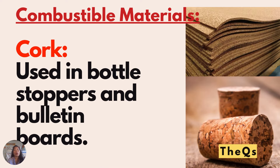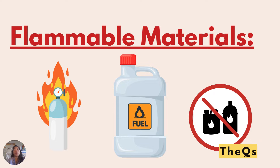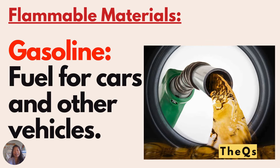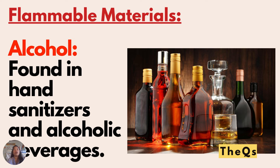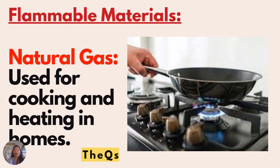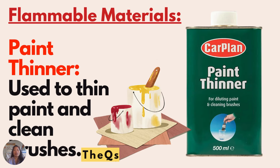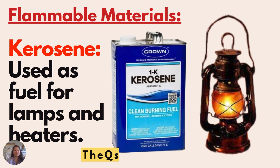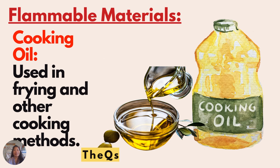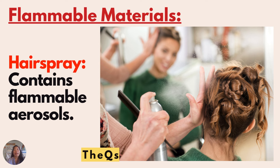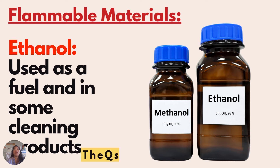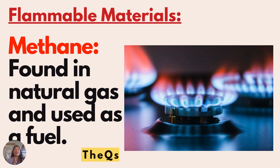Examples of flammable materials include gasoline, alcohol, propane, acetone, natural gas, paint thinner, kerosene, butane, cooking oil — yes, cooking oil is a flammable material — hairspray, ethanol, and methane. Those are the examples of flammable materials. I hope you learned something new today.